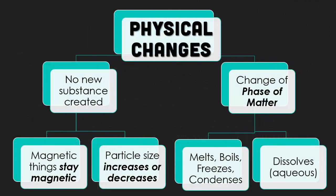Physical changes do not create a new substance. That means magnetic things will stay magnetic, but particle sizes will either increase or decrease. The phase of matter, though, will change — sometimes the substance will melt, boil, freeze, or condense. Sometimes it can be dissolved into an aqueous form.